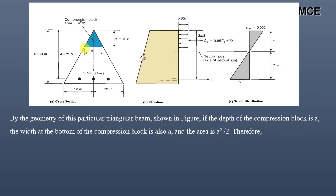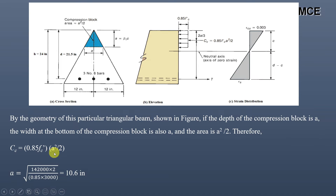The compression force equals the compression stress multiplied by the area of the compression block. Since compression stress is 0.85f'c and the area is a²/2, the compression force equals 0.85f'c × a²/2. Since the compression force from equilibrium is 142,000 lbs, solving for 'a': a = √(142,000 × 2 / (0.85 × 3000)) = 10.6 inches. This is the depth of the stress block.